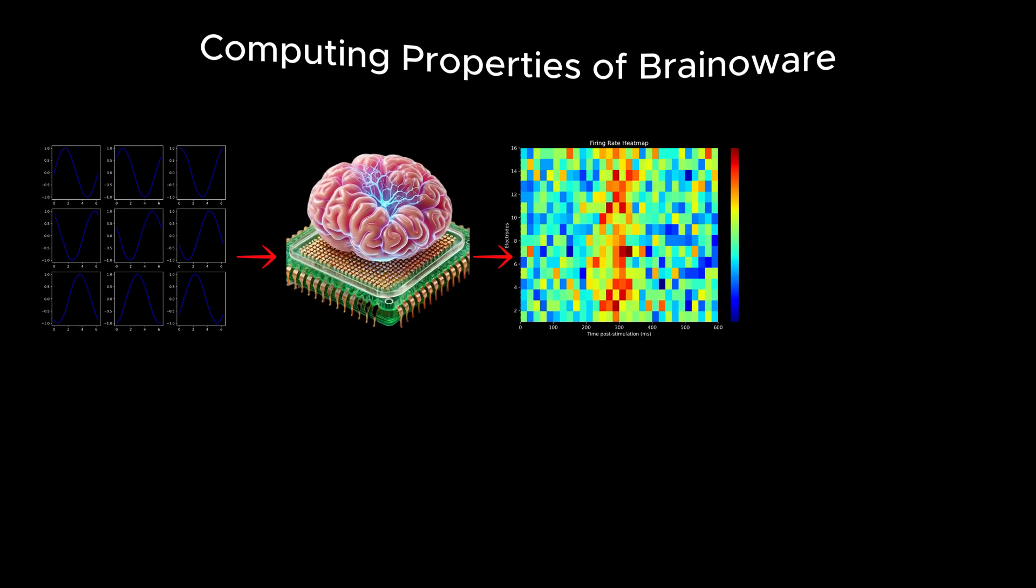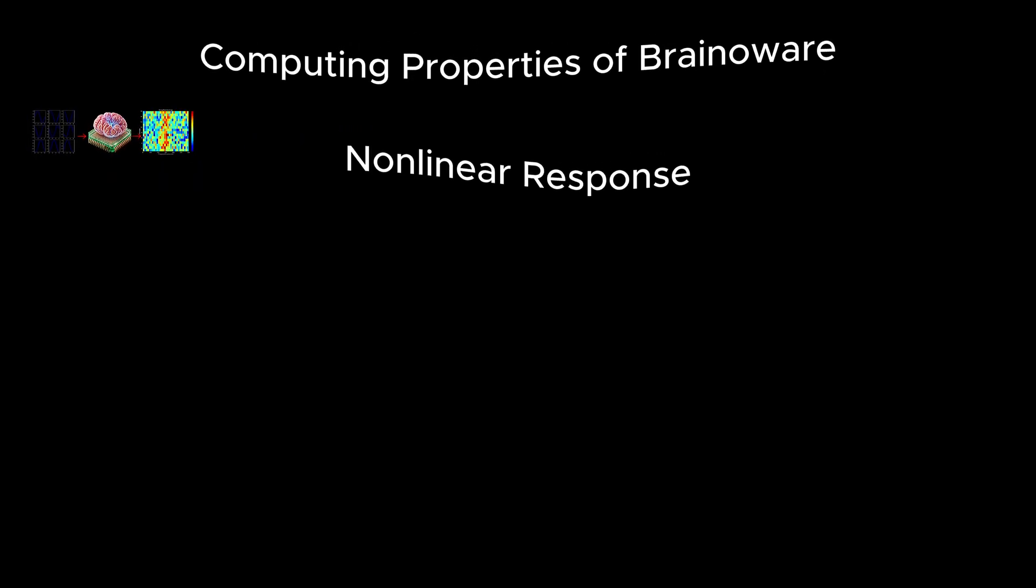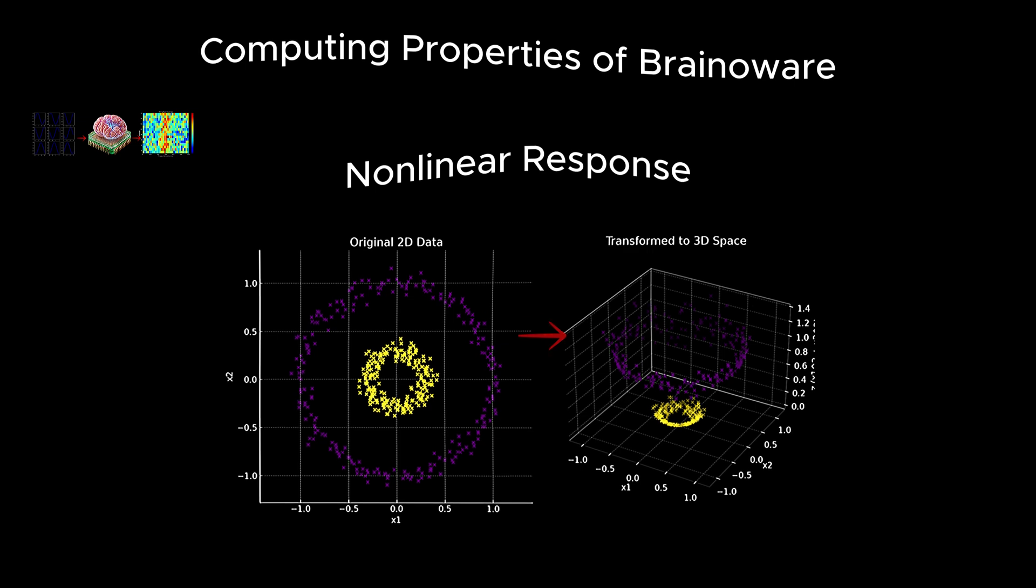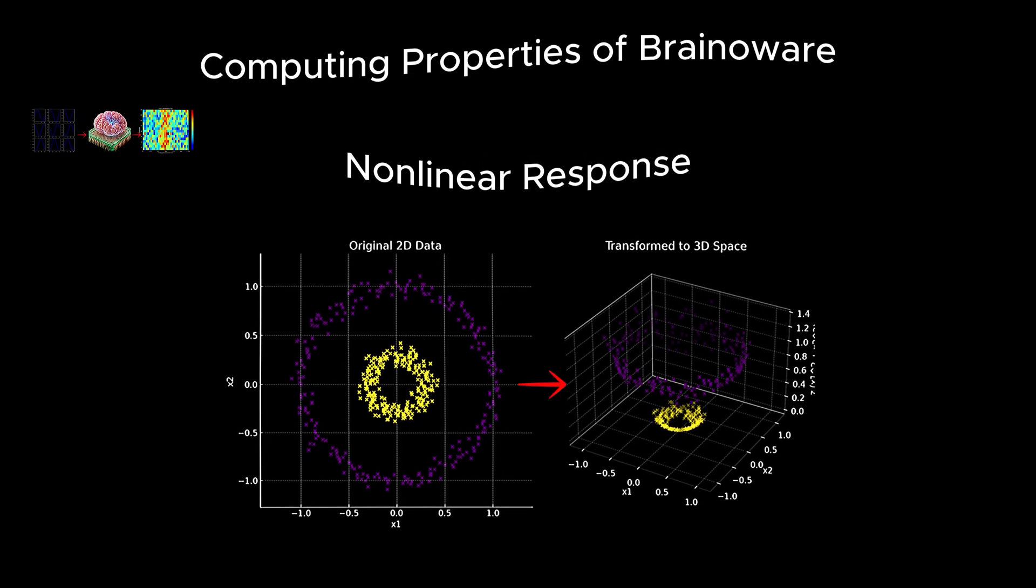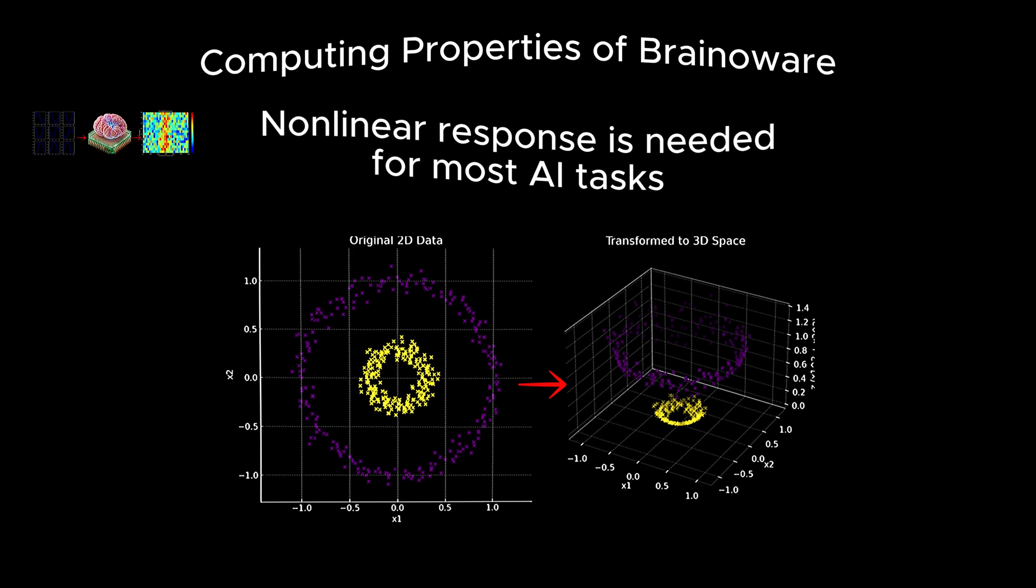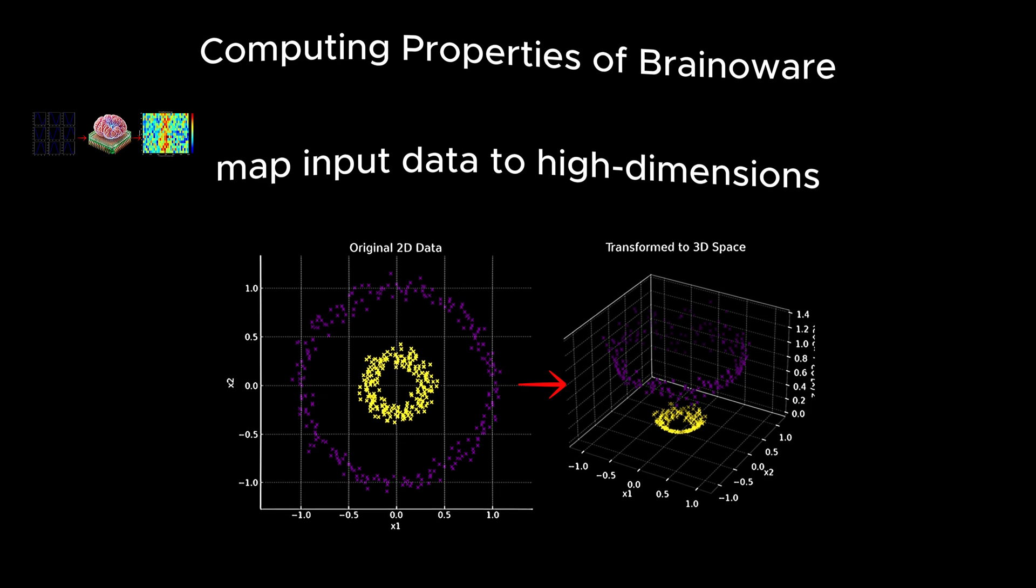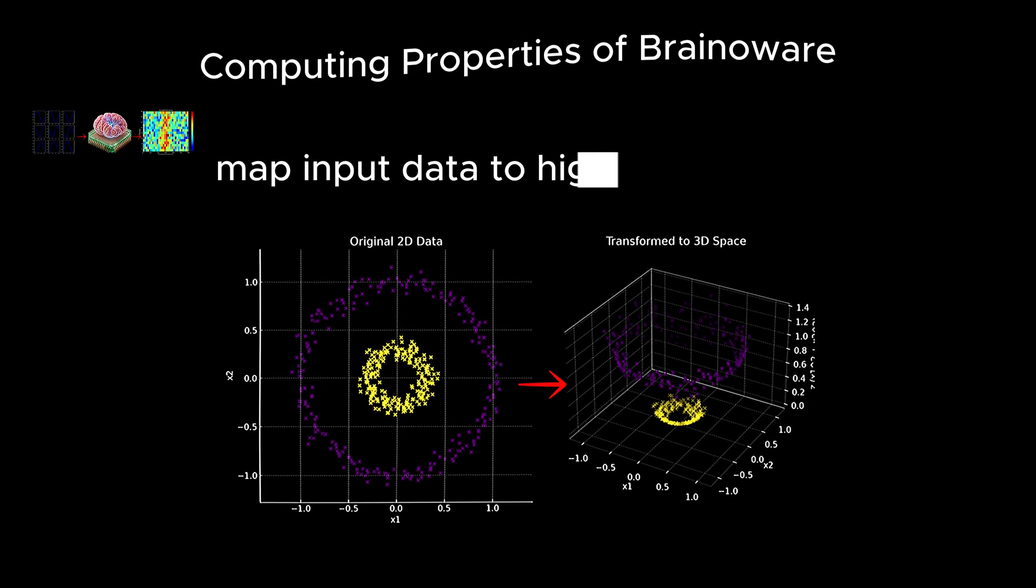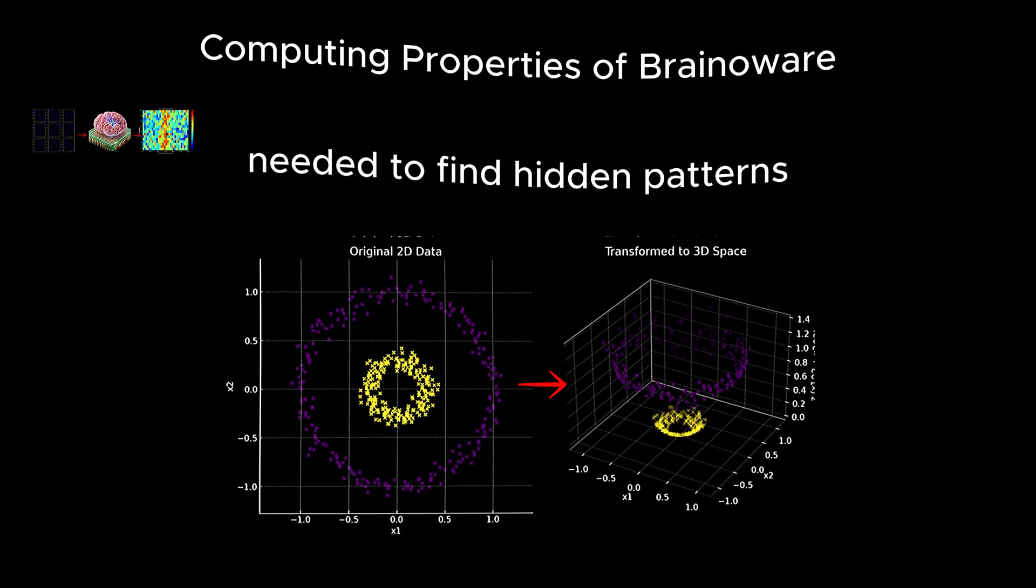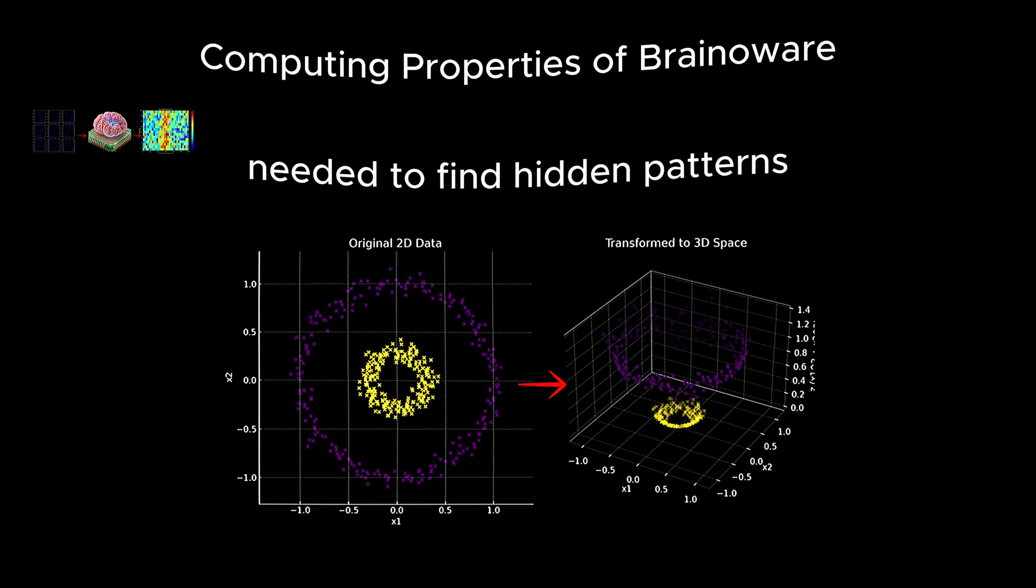Let's now explore the computing properties of BrainAware. First, researchers examined the non-linear nature of the brain organoid's responses to electrical stimulation. This non-linearity is crucial because it allows the system to transform input data into a high-dimensional computational space, enabling it to identify and process complex relationships that are essential for advanced tasks such as time series predictions and classification.